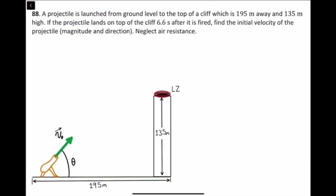This is problem 88, chapter 3. A projectile is launched from ground level to the top of a cliff which is 195 meters away and 135 meters high. If the projectile lands on top of the cliff 6.6 seconds after it is fired, find the initial velocity — magnitude and direction — neglecting air resistance. We select up as positive. Acceleration in the y-direction equals negative g. Displacement in y is 135 meters, in x is 195 meters, and the time of flight is 6.6 seconds.